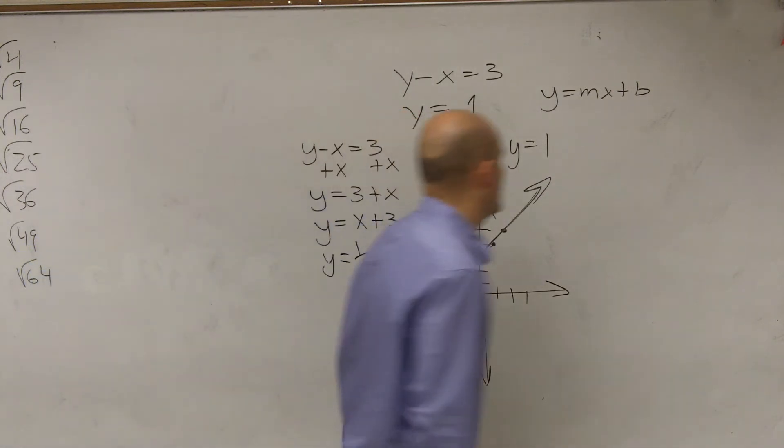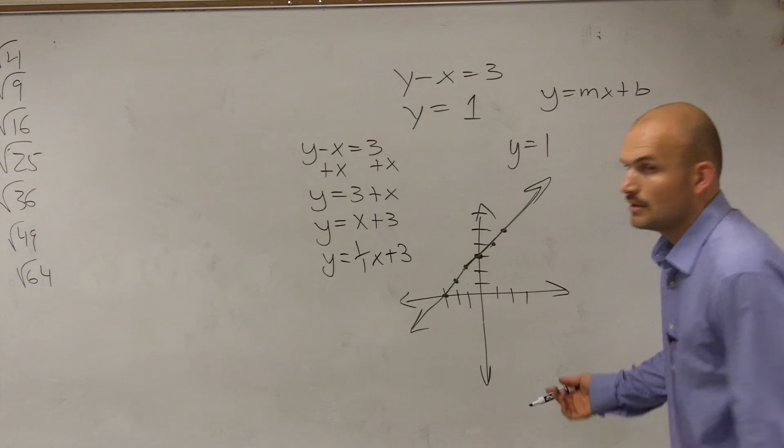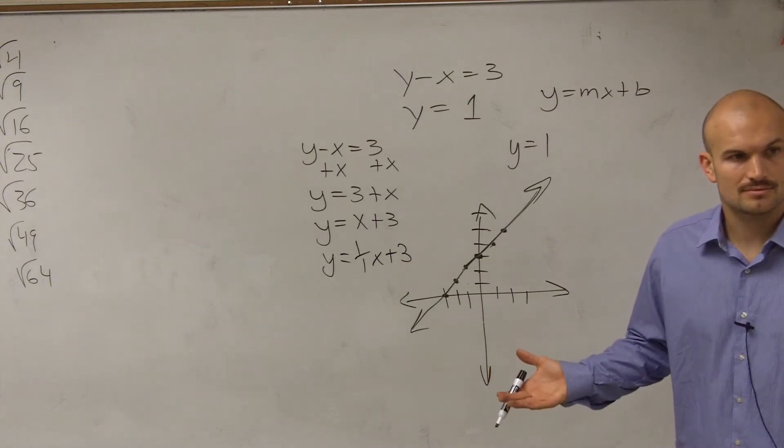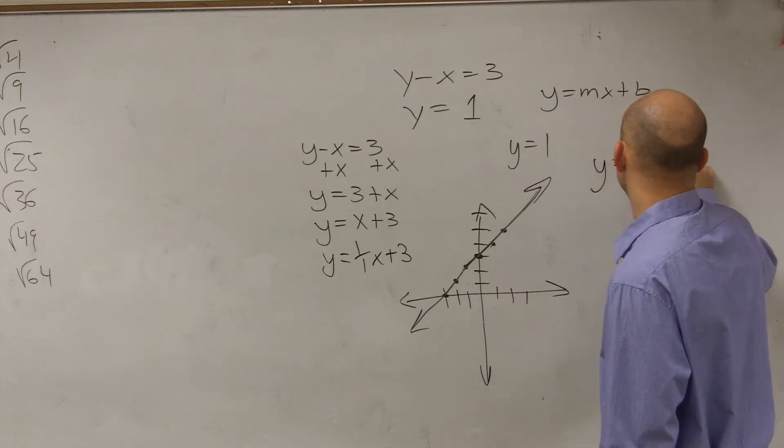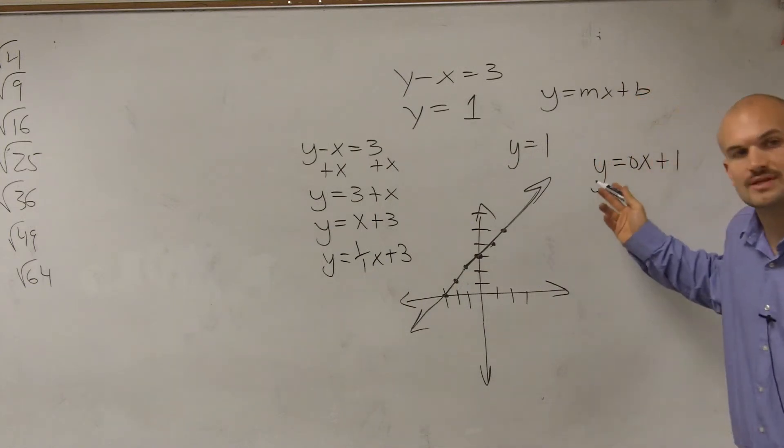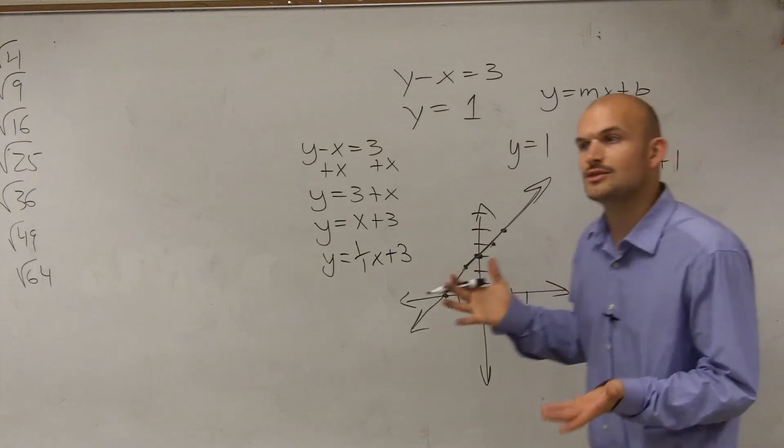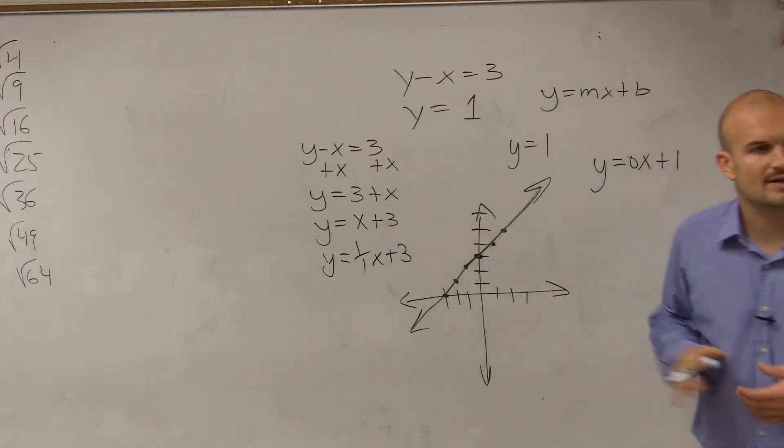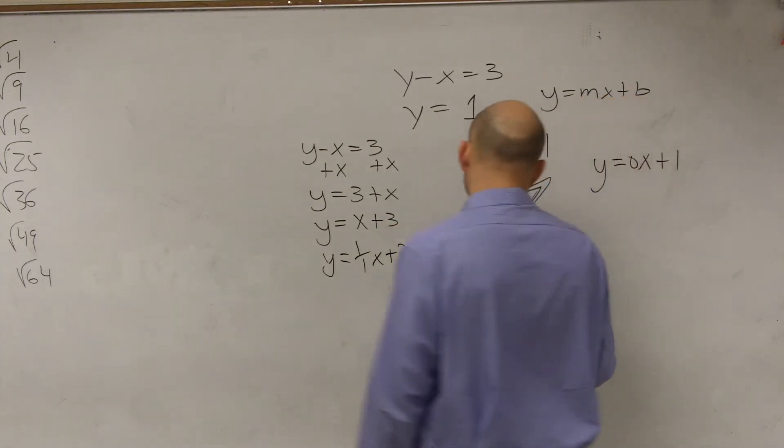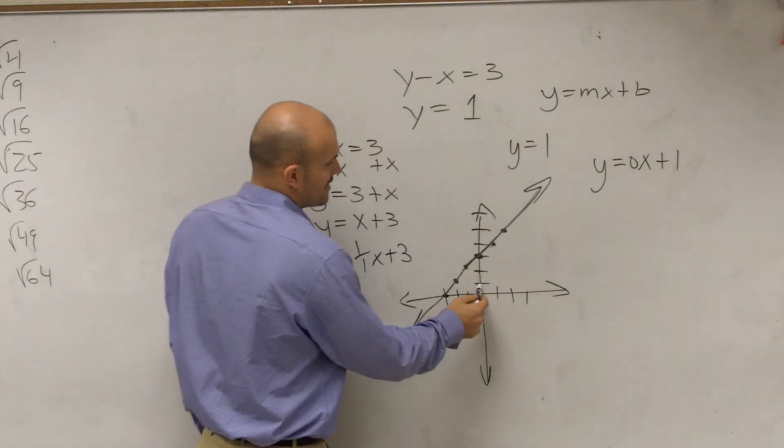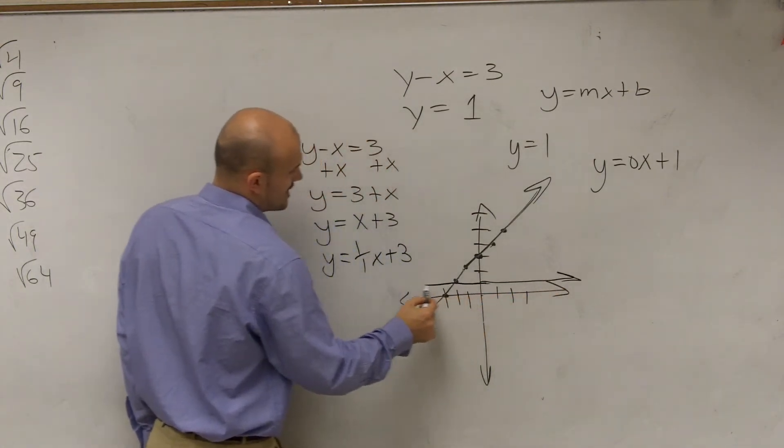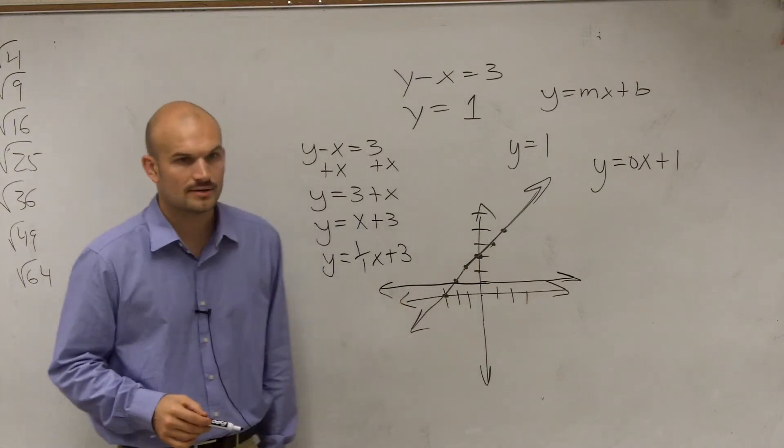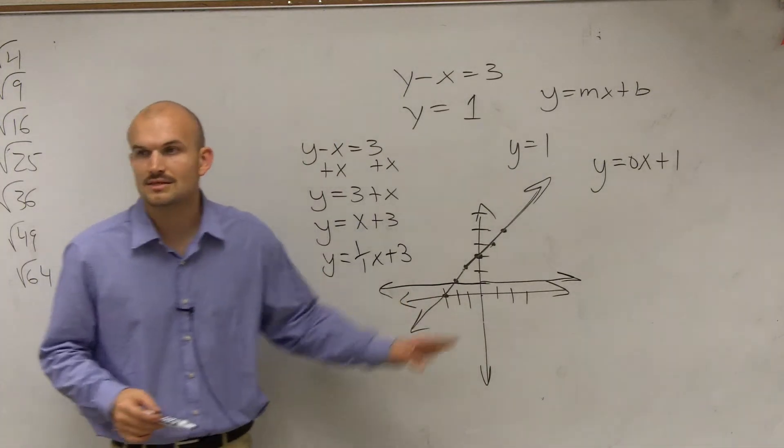Now to graph the line y equals 1, do we have a slope? No. We could rewrite this as y equals 0x plus 1, meaning my slope is 0. And hopefully you guys remember when you had a slope of 0, that means you're going to be having a horizontal line. So therefore, you go up at 1, and that means y always equals 1. So it's going to be a horizontal line at y equals 1. Because horizontal lines have a slope of 0.